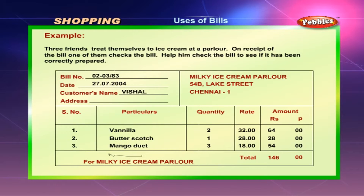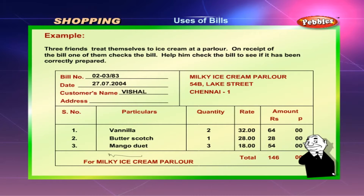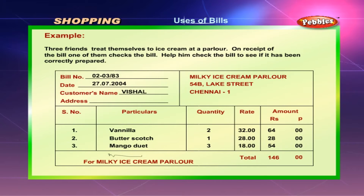Checklist: Bill number and date has been written — Yes. Bill items same as ice creams consumed — Yes. Price of ice cream written correctly — Yes. Cost calculated correctly: Vanilla 32 rupees × 2 = 64 rupees; Butterscotch 28 rupees × 1 = 28 rupees; Mango duet 18 rupees × 3 = 54 rupees. Total costs added correctly: 64 + 28 + 54 = Rs. 146. Bill has been signed — Yes.